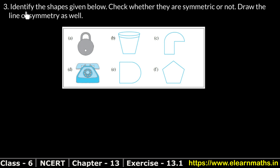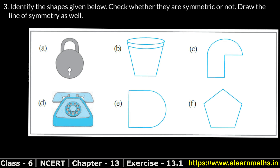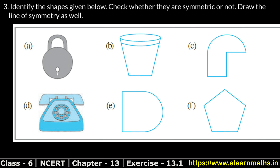Let's do question number 3. Question 3 asks: identify the shapes given below, check whether they are symmetrical or not, and draw the line of symmetry as well. Let's make our figures a little bigger. If we look at this shape — what is our lock figure — and draw a line of symmetry from the bottom, these two portions are equal. This part is the same, and this portion is the same, so our line of symmetry will be drawn vertically.